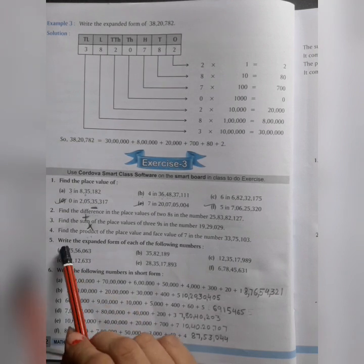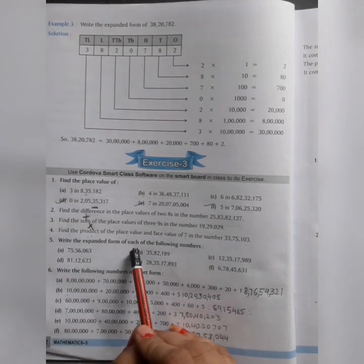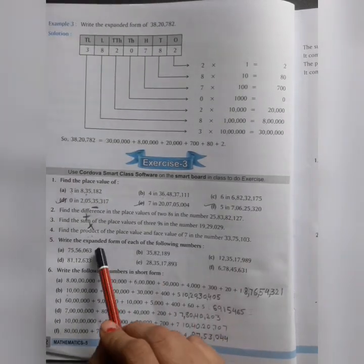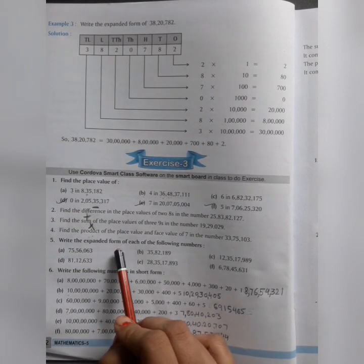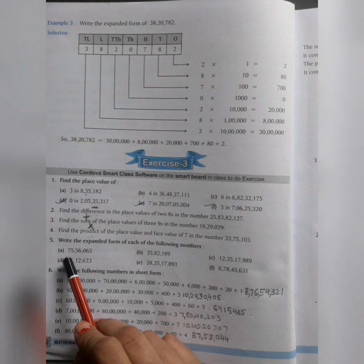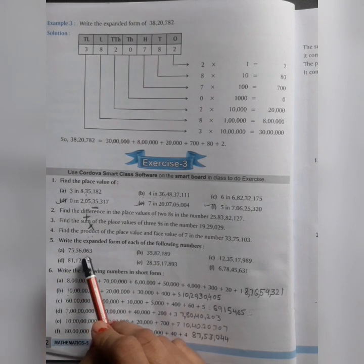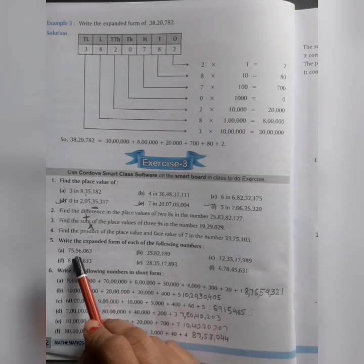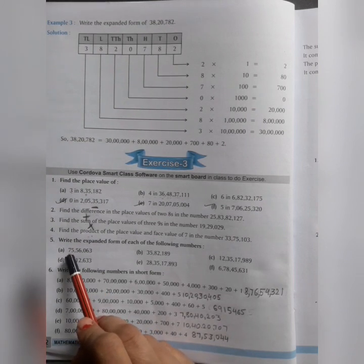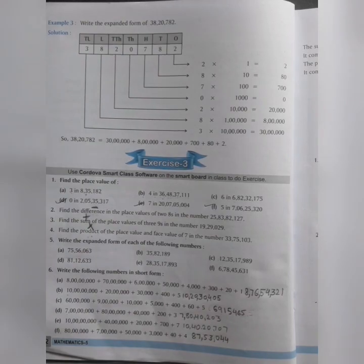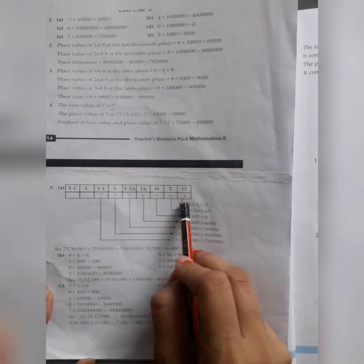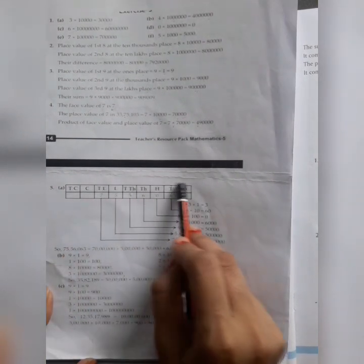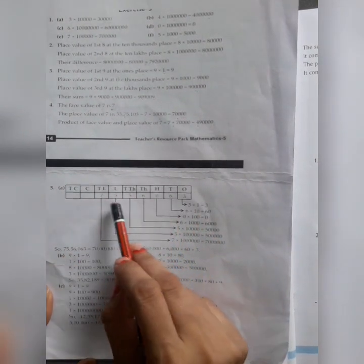Now Question number 5: Write the expanded form of each of the following numbers. Expanded form - now I have to explain what is expanded form. Write the numbers and their place value according. Let's see, 75,56,063. Now they have place values. Like I said 75,000, so we have to write their place value according. Let's see which place was it? Now we have to keep them in the chart, so we have to find out their place value. So we will arrange them according.